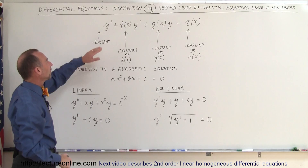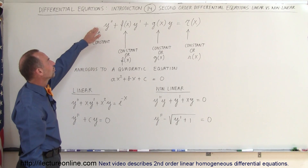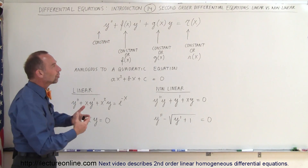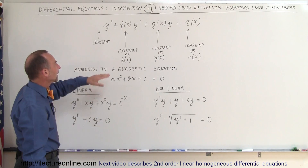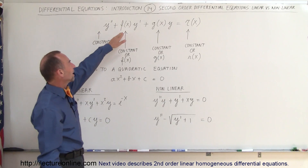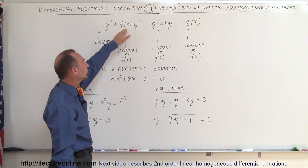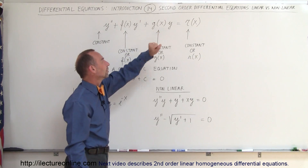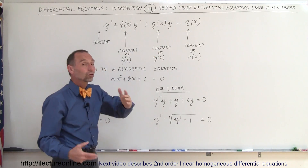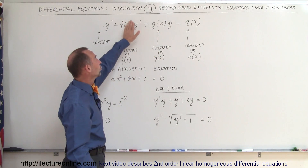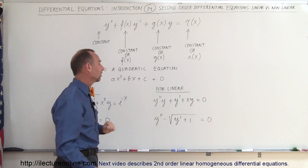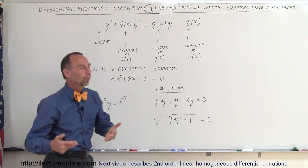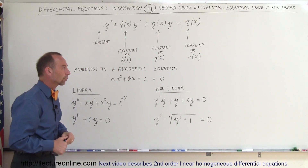If, for example, we have another function of y in front of y double prime, we don't have what we call a linear differential equation. We do have to have a function of x or a constant in front of the y prime, and a function of x or a constant in front of the y. Those could be zeros, so those two terms could be missing — we could still have a second order linear equation.